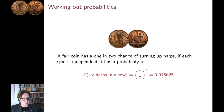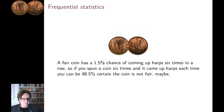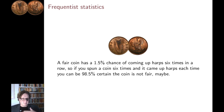What these probabilities are and what we do with them is another question. As far as probability theory is concerned, we'll have a definition of what the probability is, but how we apply it to real-world problems is often a more complicated problem. One example of how we apply probability theory is frequentist statistics — that's the science, or some might say the art, of making deductions about real-world situations from data.